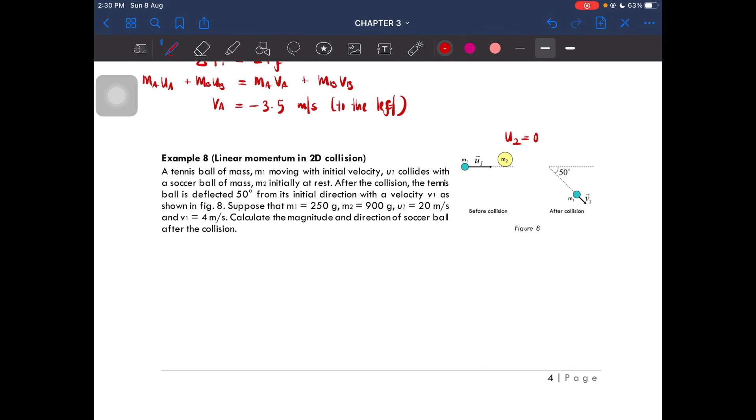After the collision, the tennis ball is deflected 50 degrees from its initial direction with a velocity shown here as v1. Suppose that m1 is 250 grams, which is 0.25 kilograms, and we have m2 which is 0.9 kilograms. The initial velocity of mass one is 20 meters per second.